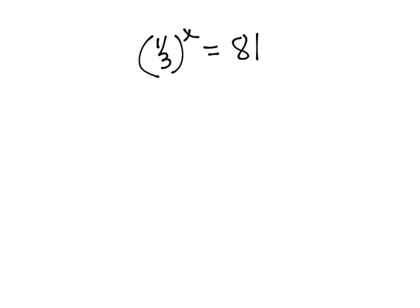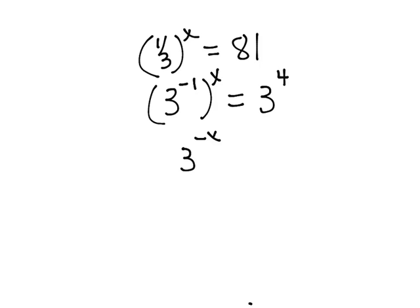So we can write one-third as 3 to the negative one to the x, and 81 as 3 to the fourth. 3 to the negative one to the x is 3 to the negative x. That equals 3 to the fourth.